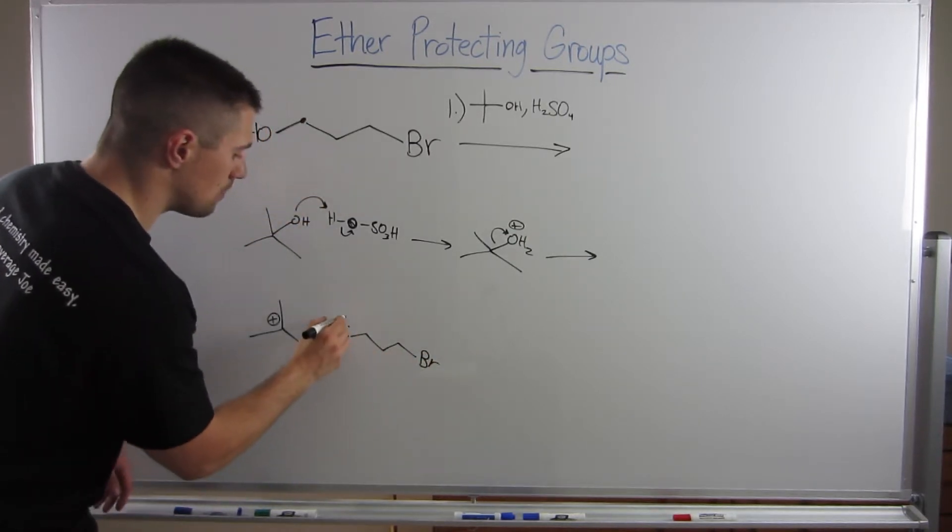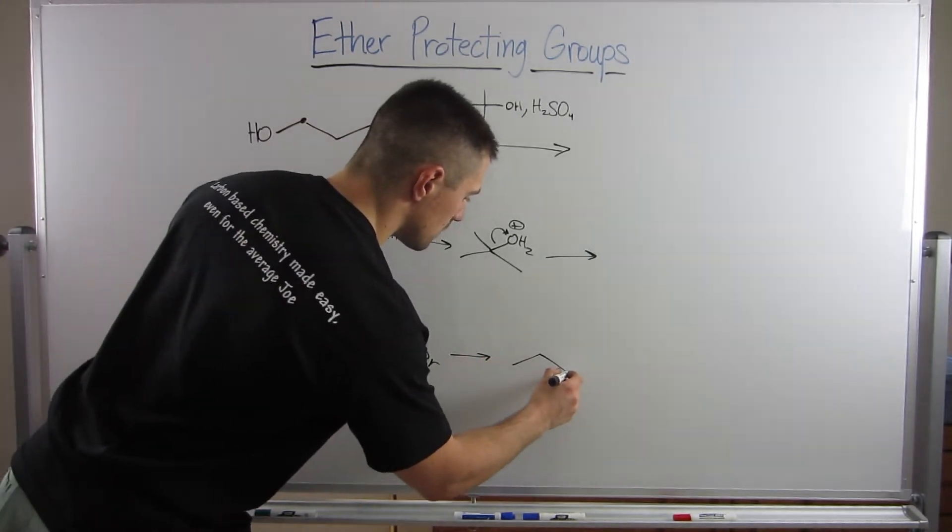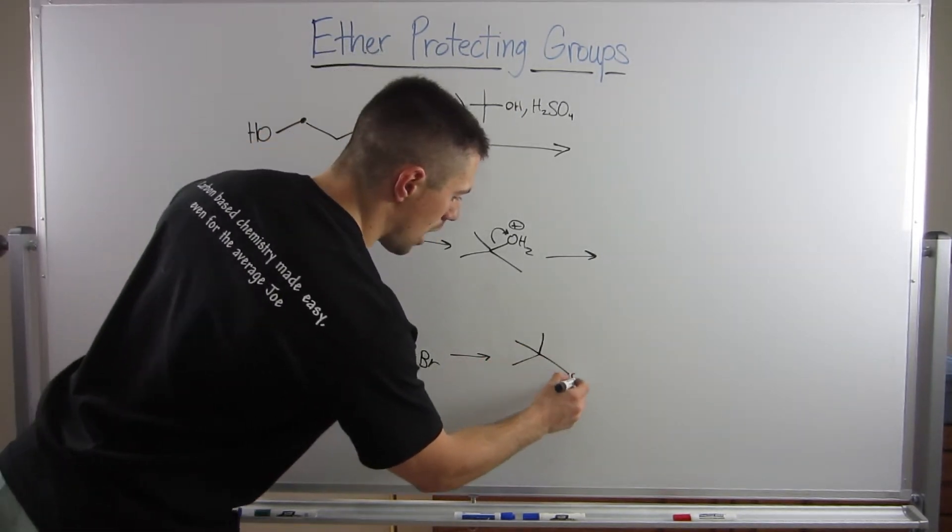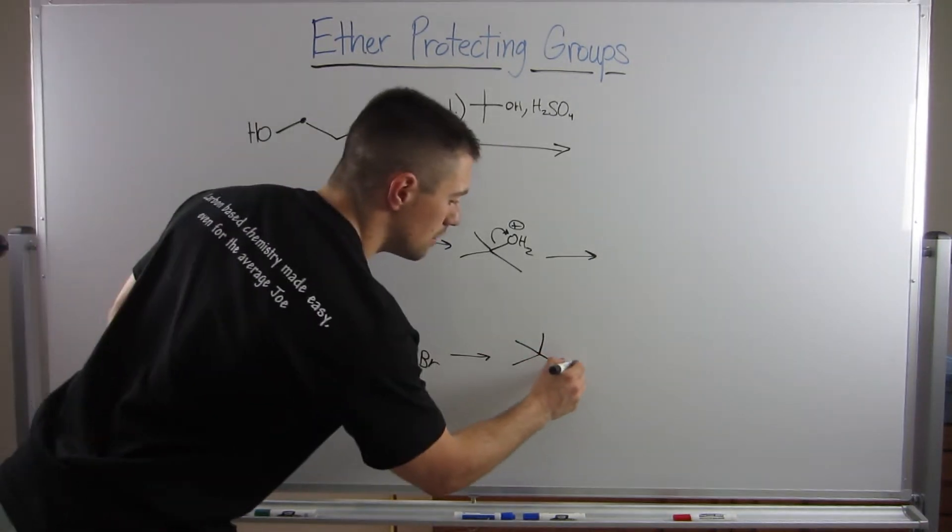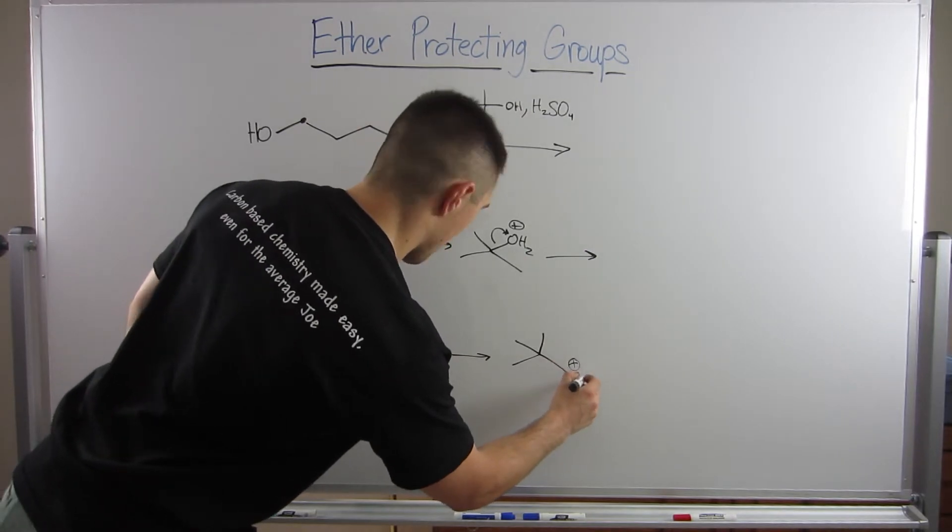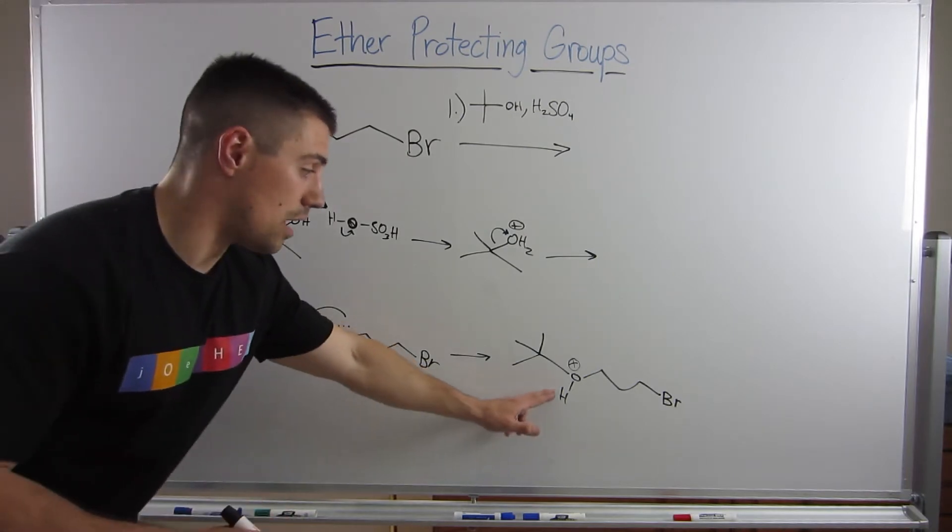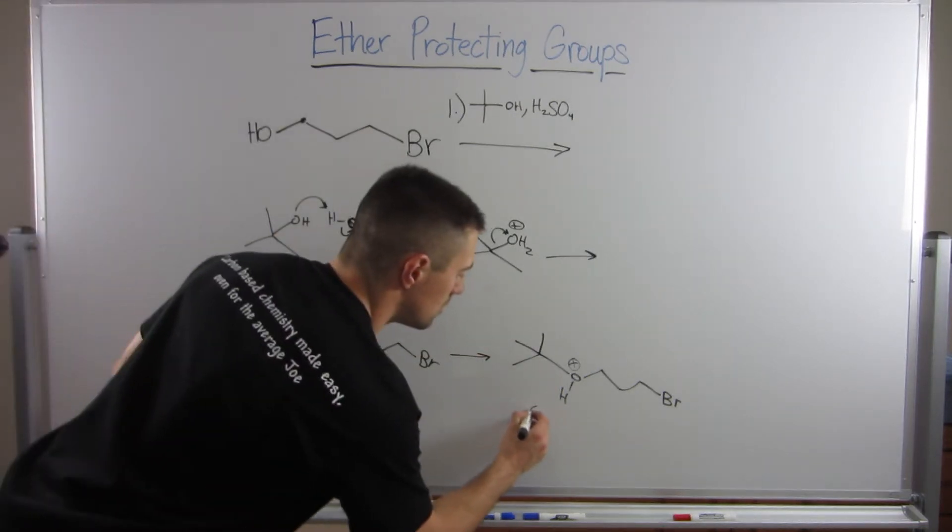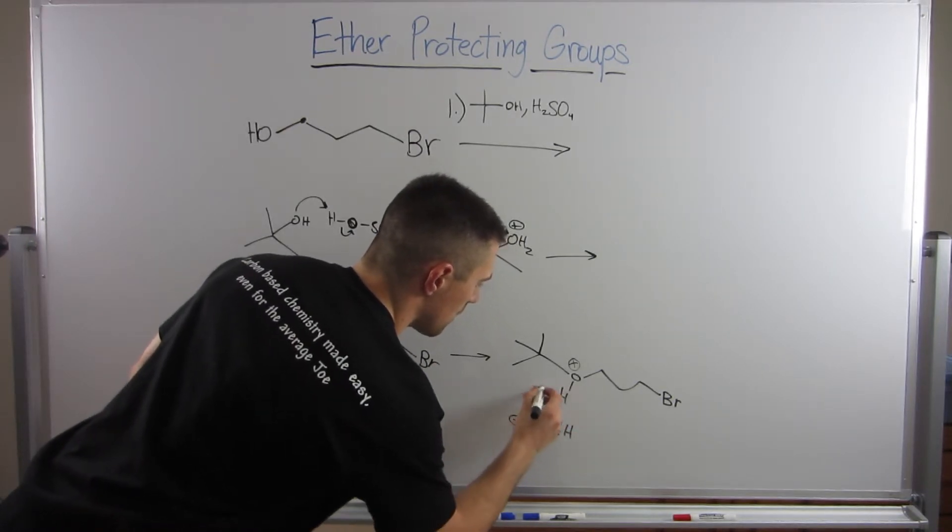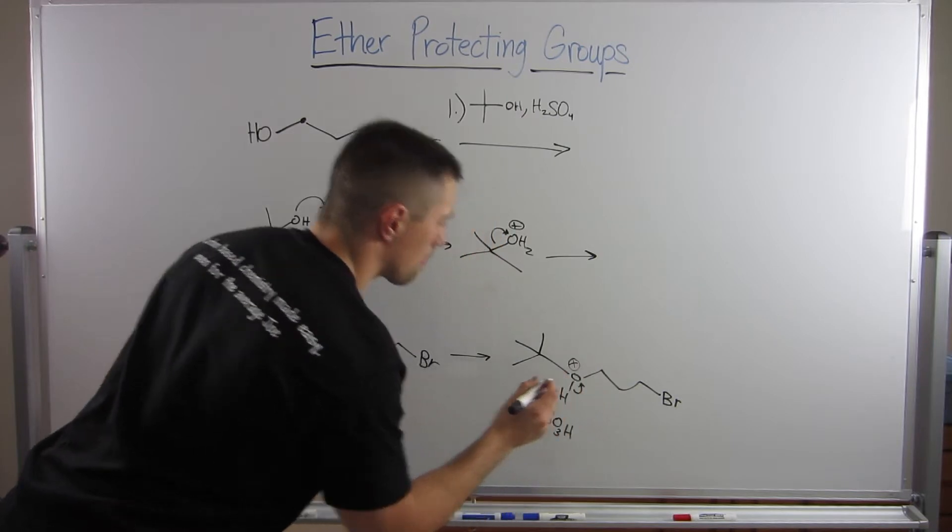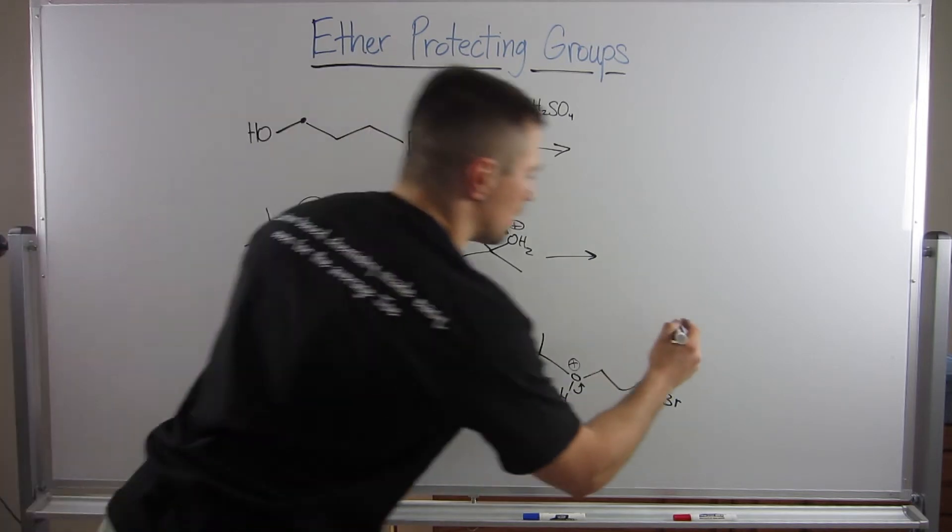You have the oxygen now, it attacks the carbocation. So there's the three carbons right here, or the four carbons rather that we just added. Something will come by to clean this up, probably the conjugate base of this.